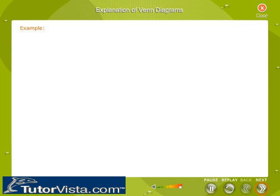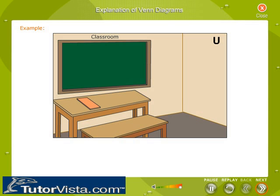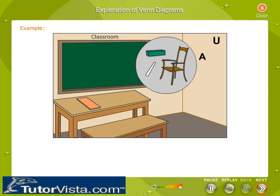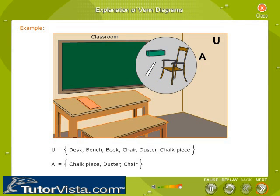To make this clear, let us consider an example. The universal set represents a collection of objects in a classroom: desk, bench, book, chair, duster, and chalk piece. Set A contains a chalk piece, a duster, and a chair. Set A is a subset of the universal set. In the Venn diagram, the rectangle represents the universal set, and the circle representing subset A contains the chalk piece, duster, and chair, while the desk, book, and bench are outside the circle but inside the rectangle. Similarly, we can use Venn diagrams to represent the union and intersection of sets.